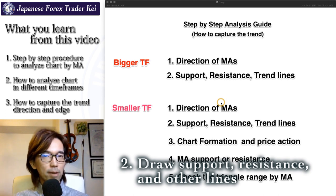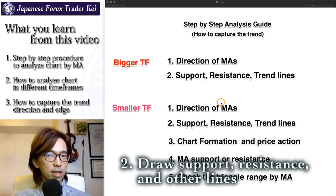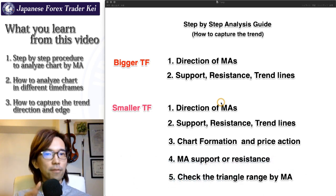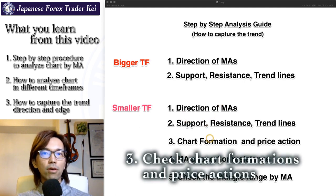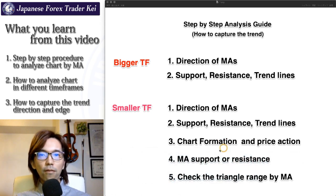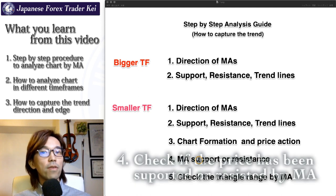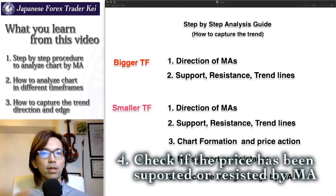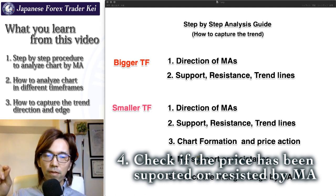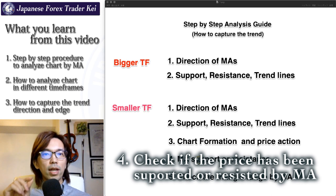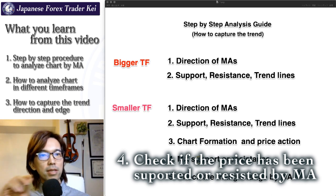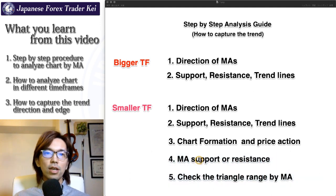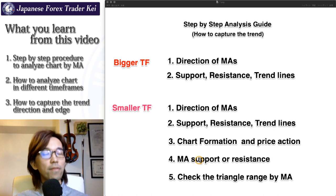Every time you look at the lower timeframe chart, make sure the price is somewhere close to the resistance, support, or trend lines in the bigger timeframe. Then check the chart formations and price actions of the market, like thrust up or pin bars — things like that I explained on the price action videos. Then on the 4th point, you wait and see if the price is going to be either resisted or supported by the moving averages. When the market is on a bull trend and steady, the price keeps supported by the moving average and moves up. When a trend is steady bearish, the price tends to be resisted by the moving average and keeps going down.